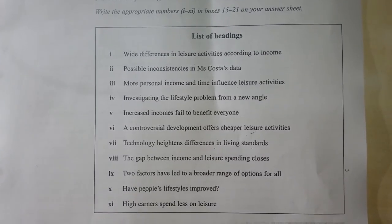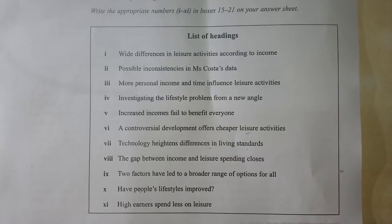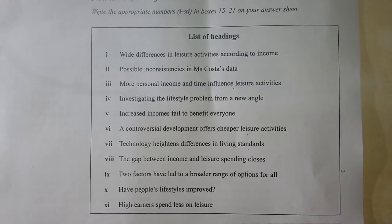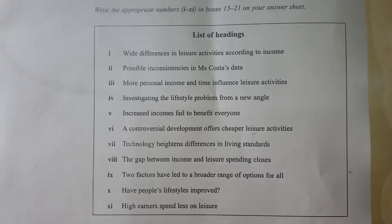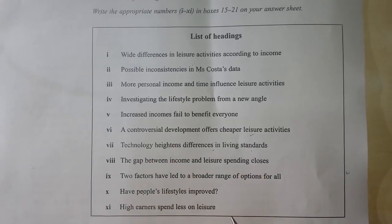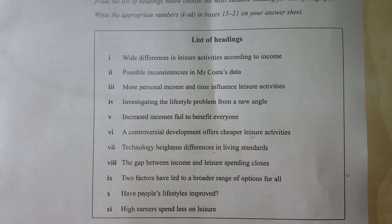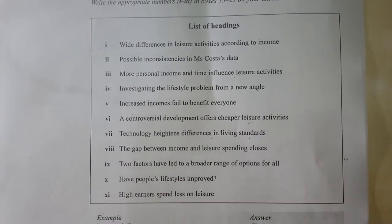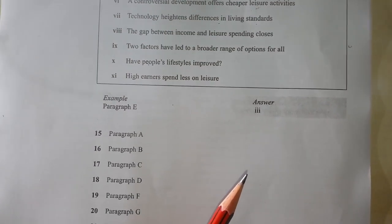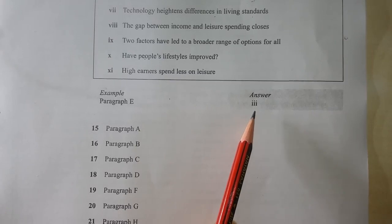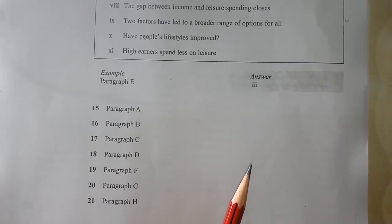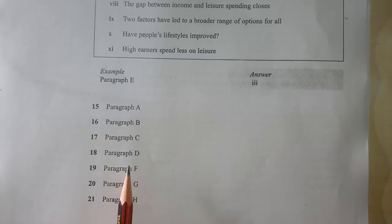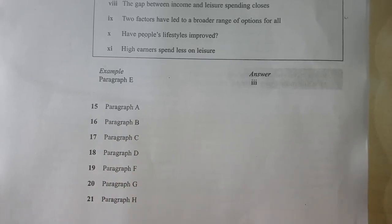These are the list of headings from which we have to select our answers: why differences in leisure activities according to income, possible inconsistencies in Costa's data, more personal income and time influence leisure activities, investigating the lifestyle problem from a new angle, increased income fails to benefit everyone. These are the headings numbered 1 to 11. An example is done for us — paragraph E — and the questions are 15, 16, 17, 18, 19, 20, and 21.